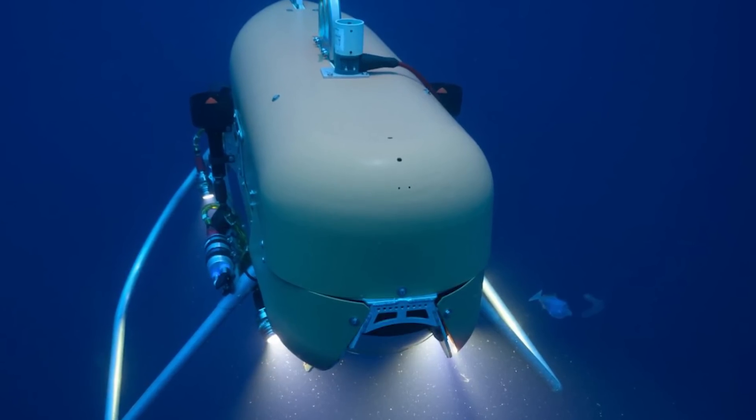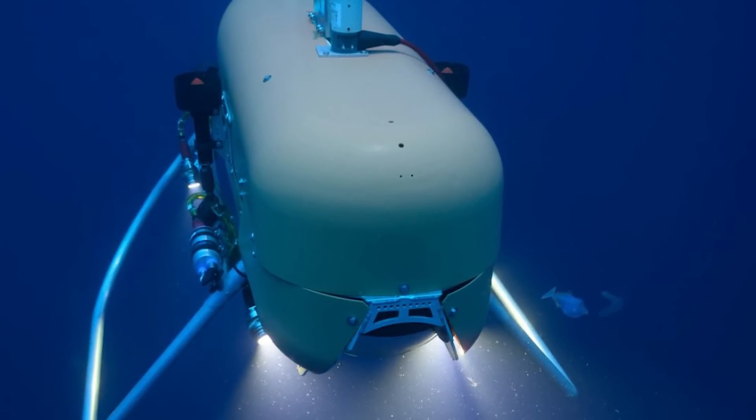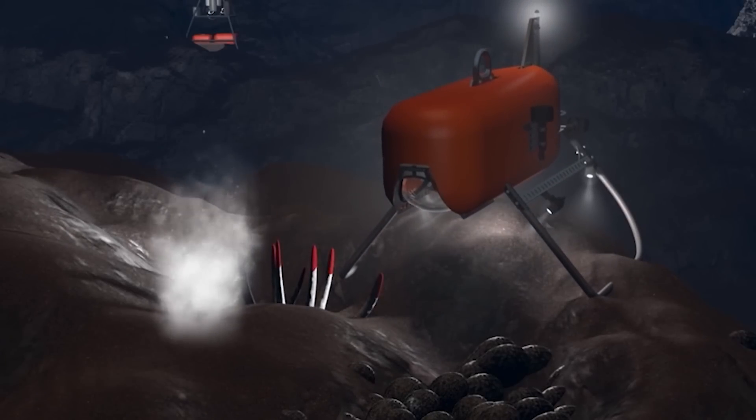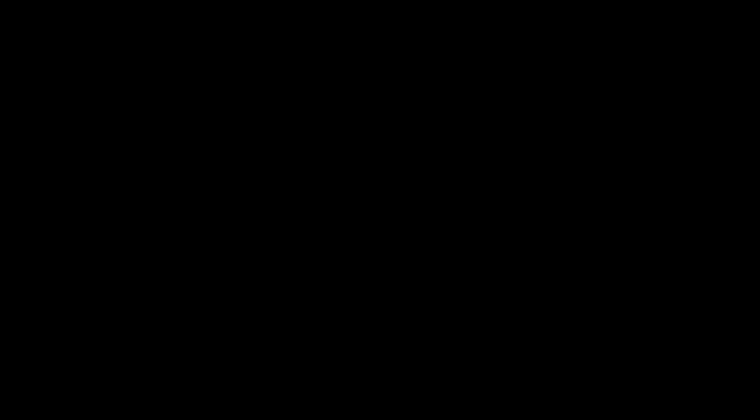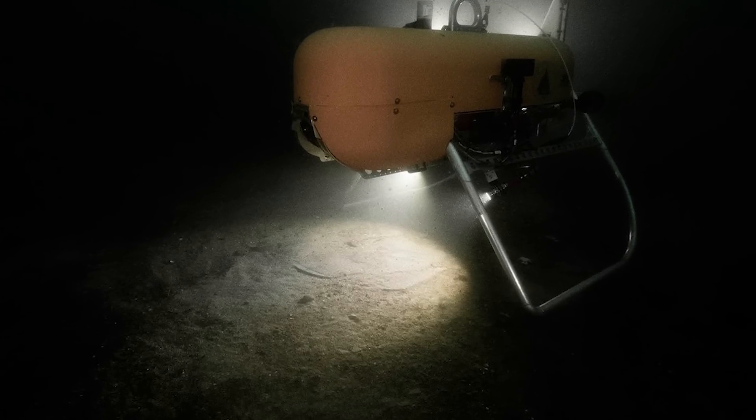Beyond the challenges posed by pressure and temperature, Orpheus must also navigate through complete darkness. Equipped with a powerful flashlight, the robot has to conserve energy and only use light when capturing images or collecting samples. In all other instances, Orpheus switches into a power-saving mode.